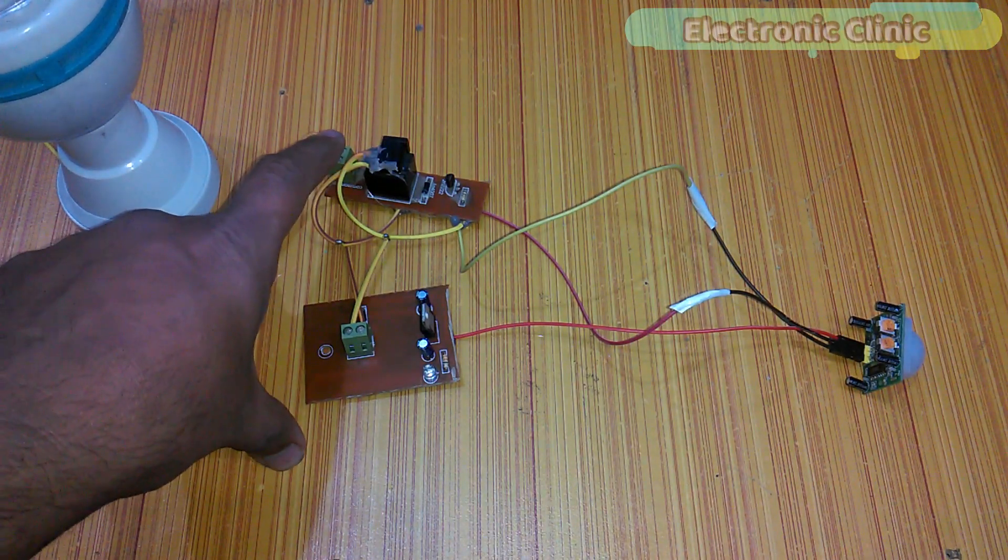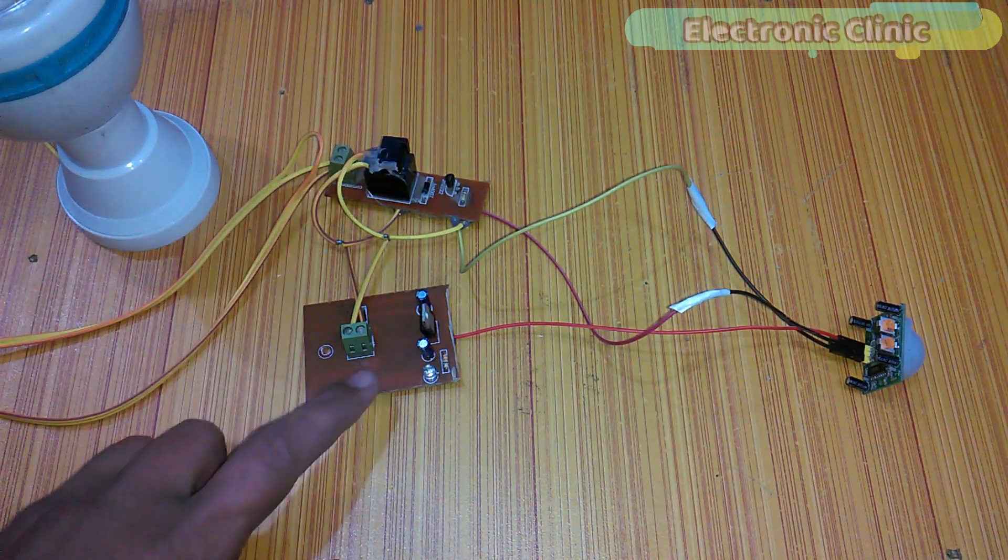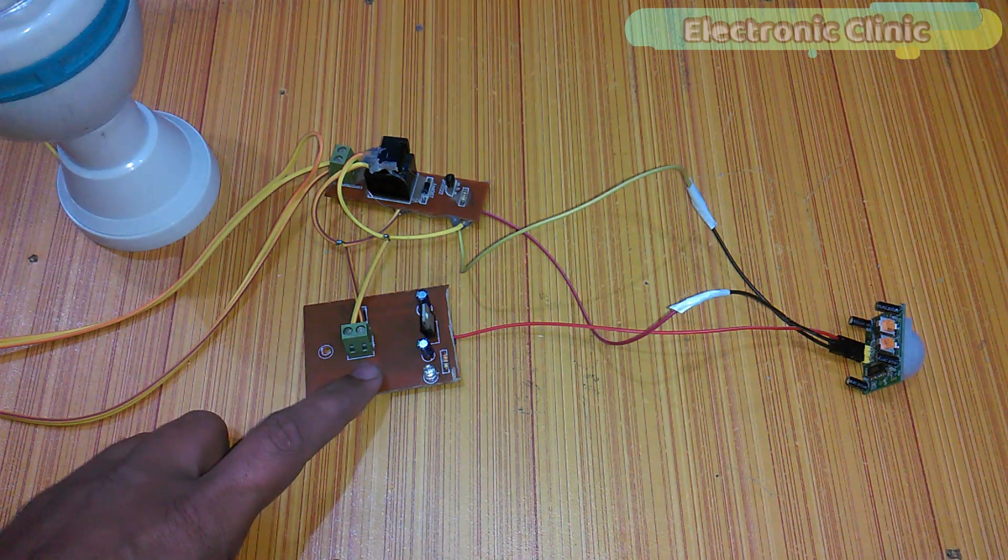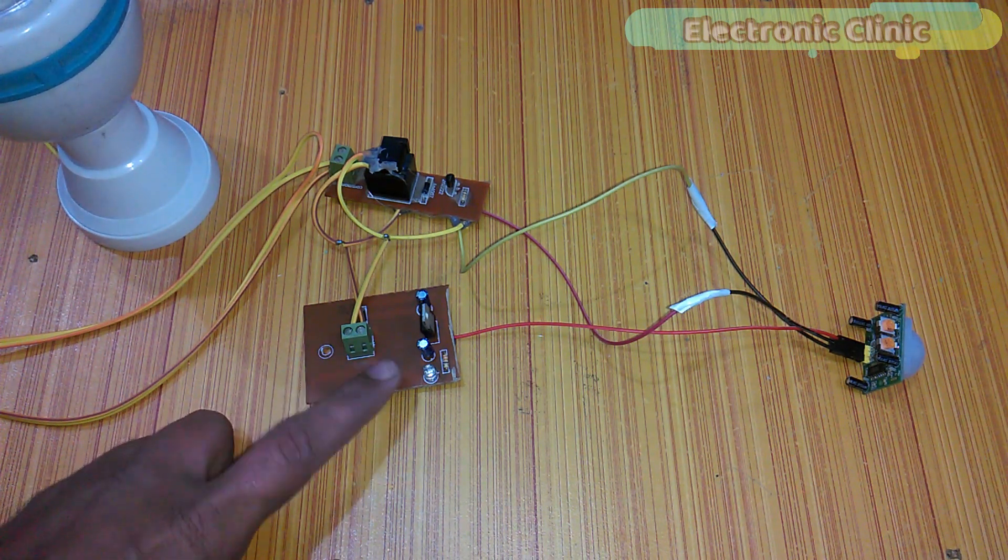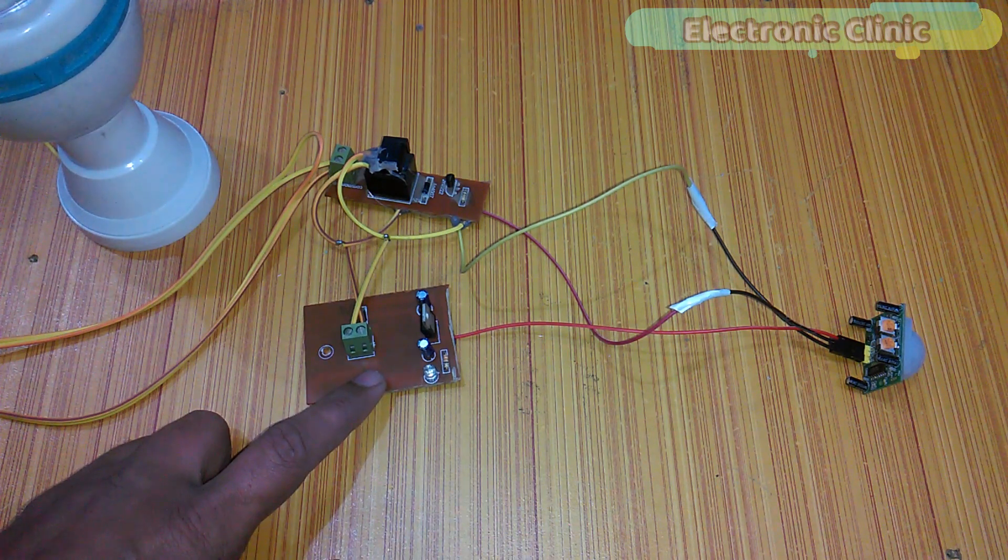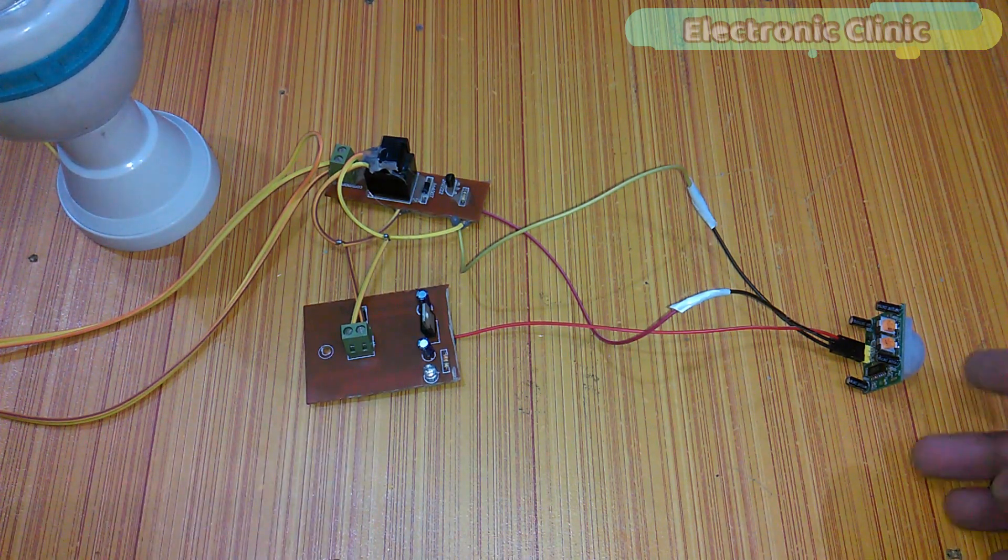This is a one channel relay module and this is the 5 volt regulated power supply based on LM 7805 voltage regulator and this is the PIR sensor.